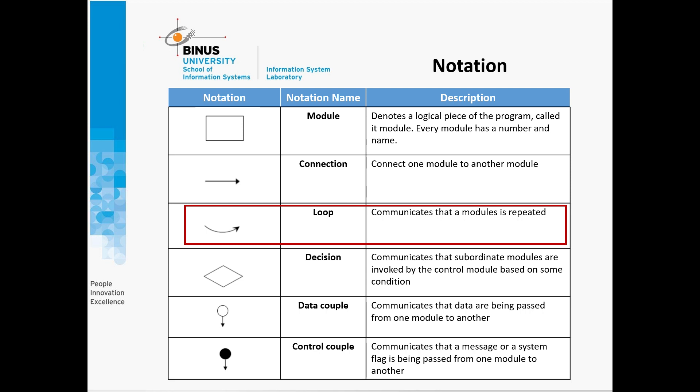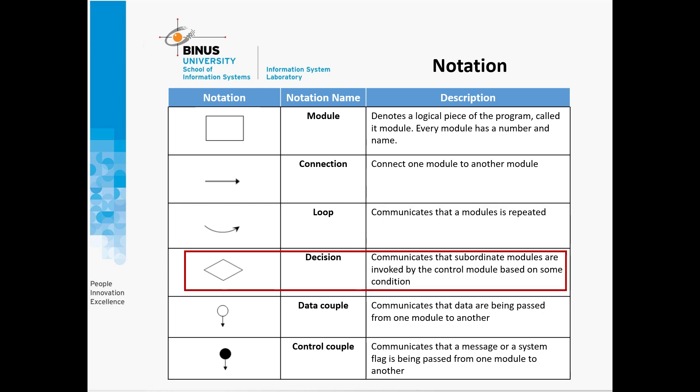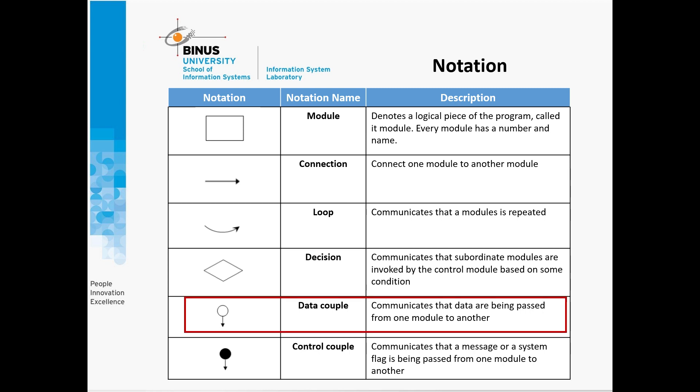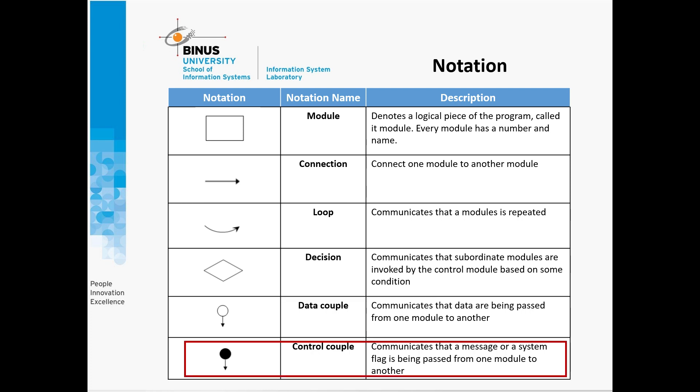Third, loop — a loop communicates that a module is repeated or iterated. Fourth, decision — communicates that subordinate modules are invoked by the control module based on some condition. Fifth, data couple — communicates that data are being passed from one module to another module, for example a type of data or attribute being passed. Last, control couple — communicates that a message or a system flag is being passed from one module to another module, for example payment authorization or booking ID.